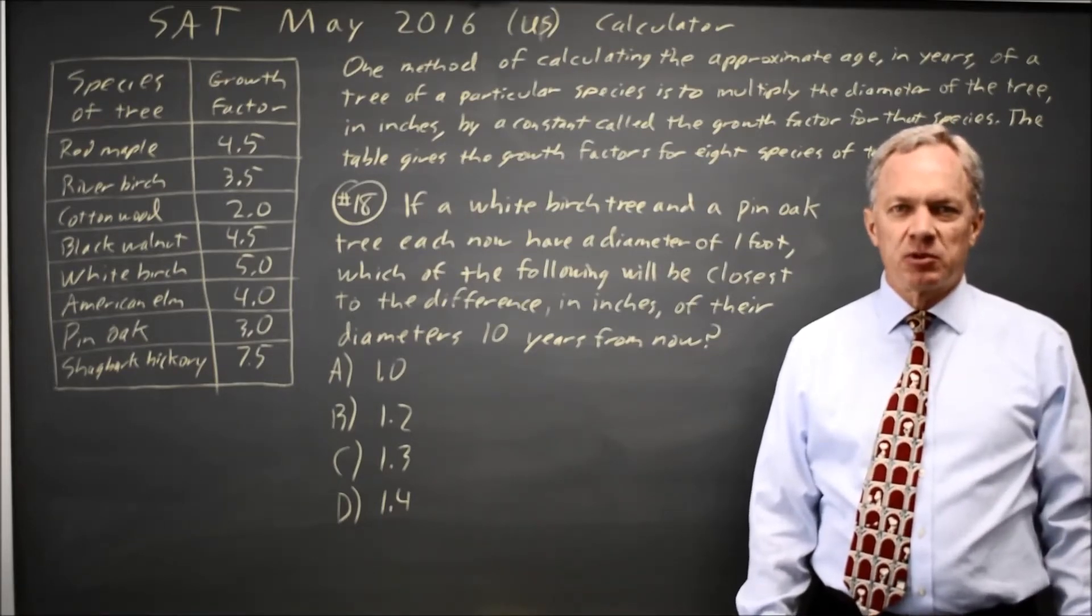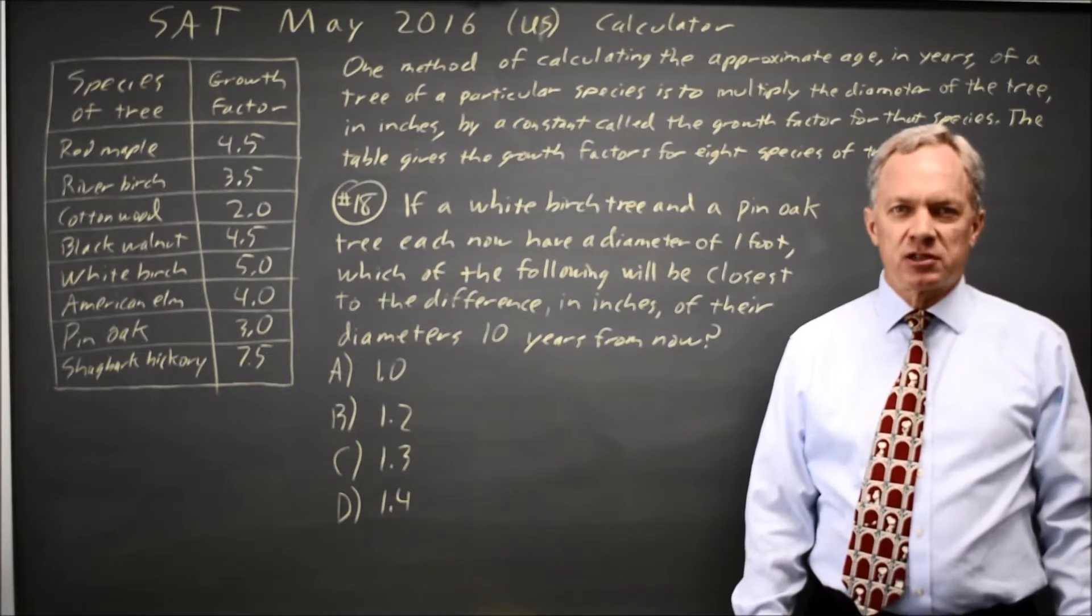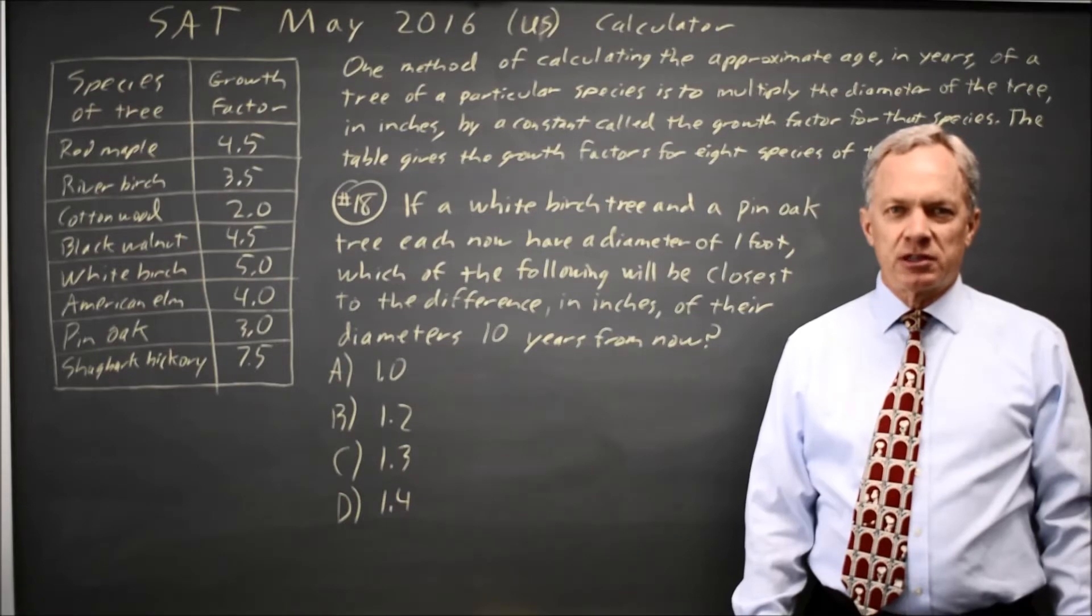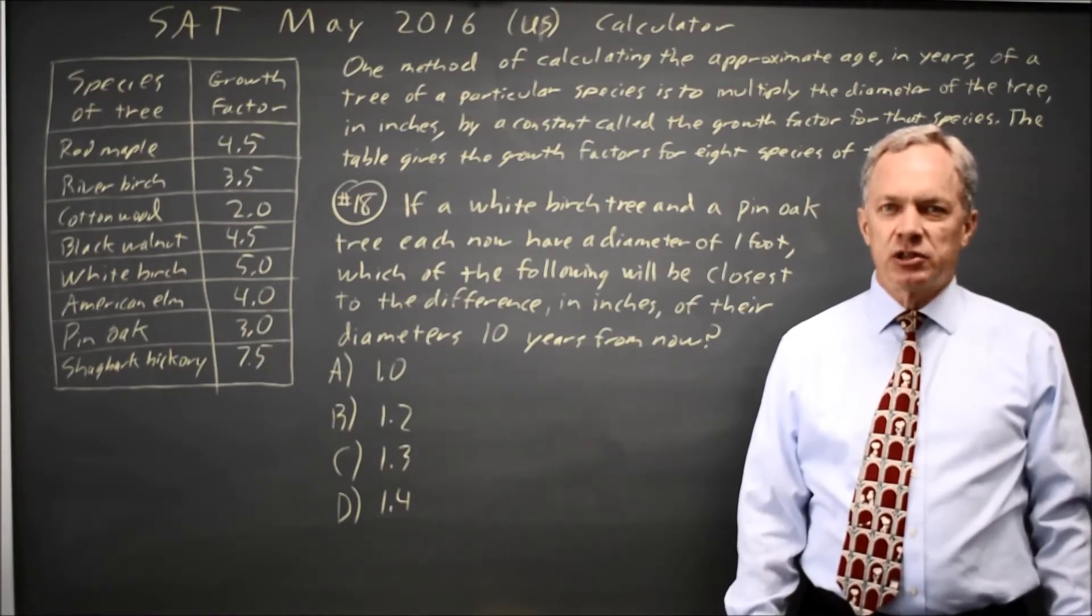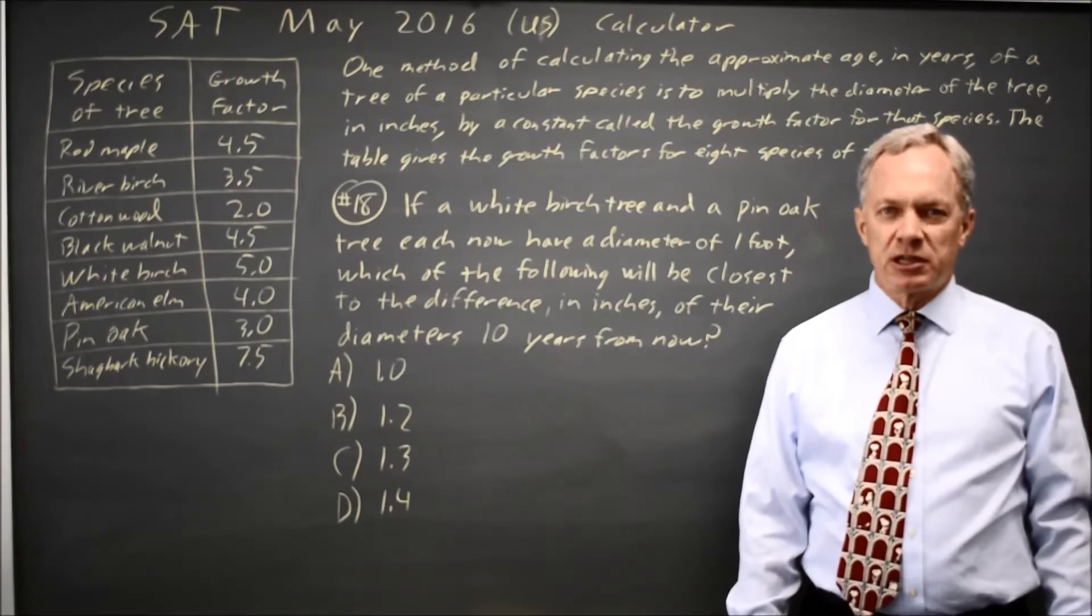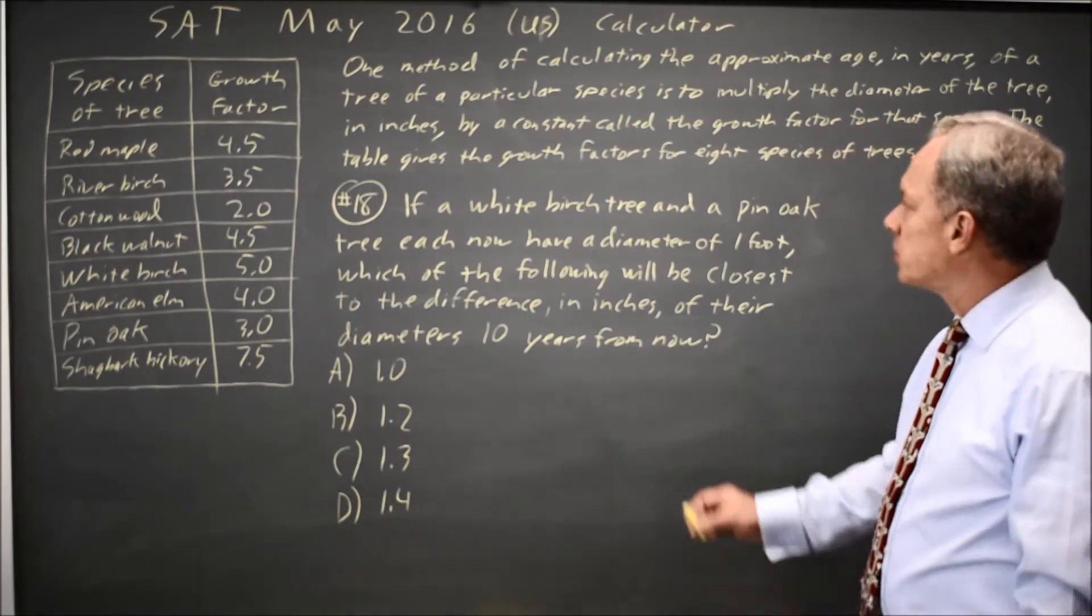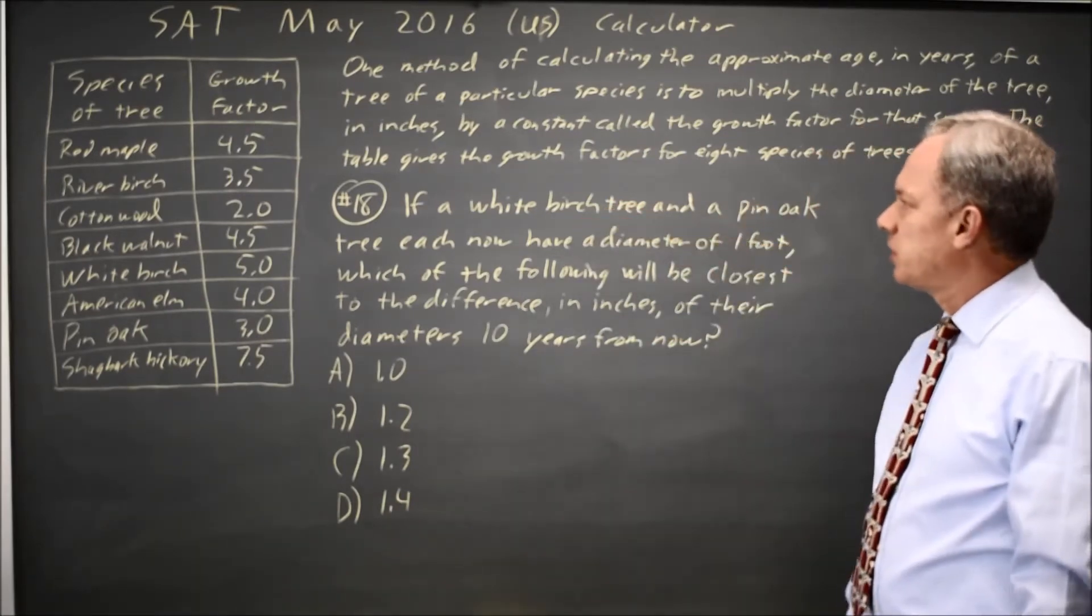The College Board gives us a table of data giving the growth factors for trees. A growth factor multiplied by the diameter of the trunk gives you an estimate of the age of the tree. And they ask if two trees have the same diameter of 12 inches now, what's the difference in their diameter 10 years from now when one tree is a white birch and the other is a pin oak.